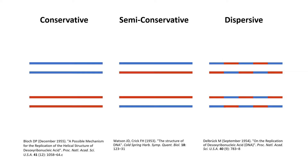Now that we understand the different hypotheses of DNA replication, let's see how the Meselson and Stahl experiment confirmed the semi-conservative hypothesis and rejected the other two.